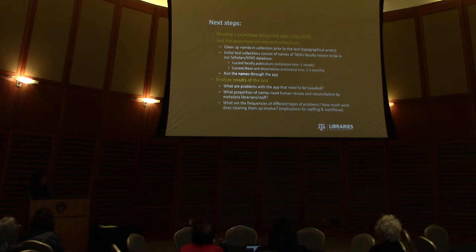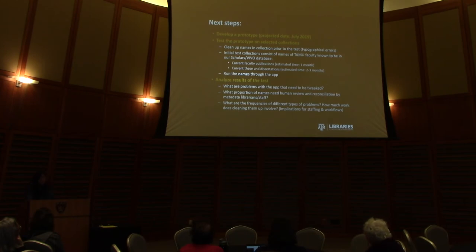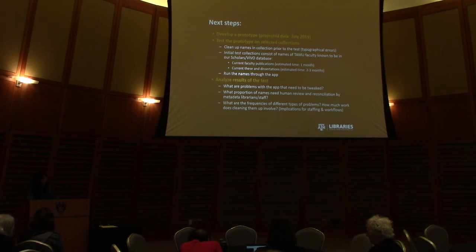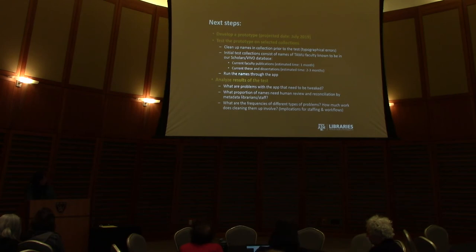Once the app is ready, we'll have cleaned up these names using OpenRefine to get rid of obvious issues like period versus no period at the end of initials, then run them through the app. We'll analyze results to see what problems exist and what needs improvement. Importantly, we'll look at what proportion of names actually need human review and reconciliation, what types of problems occur, how frequently they appear, and what the implications are in terms of time and staffing for our local metadata management unit.